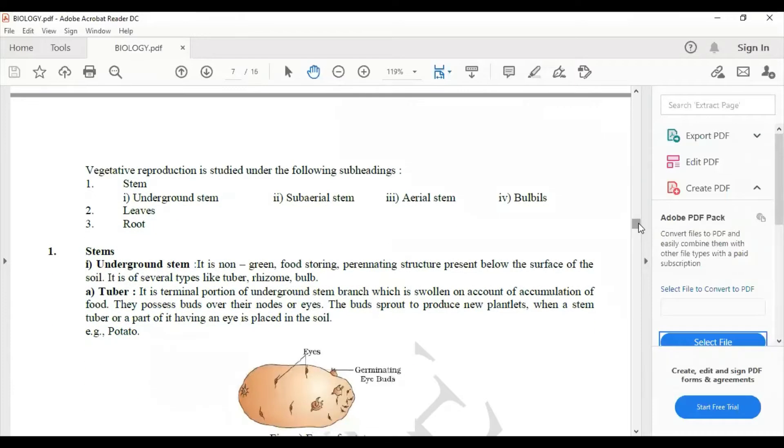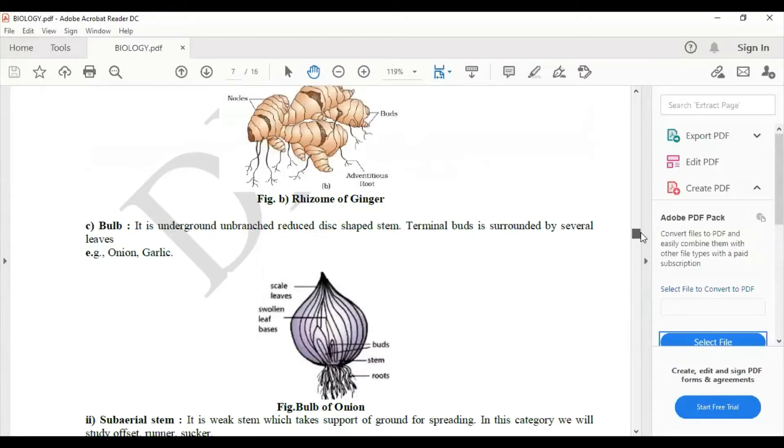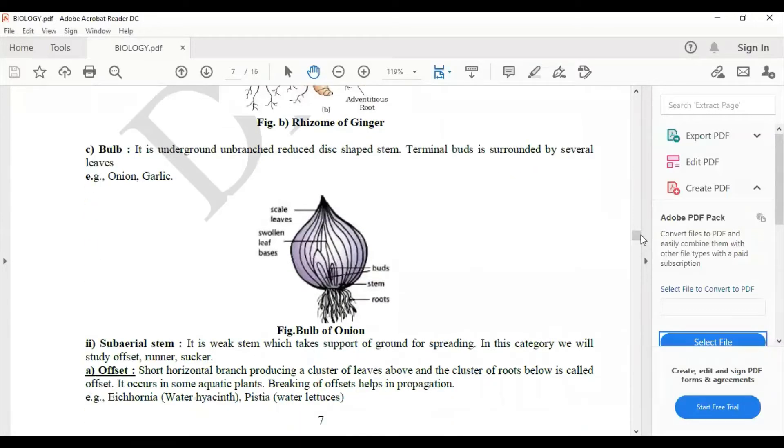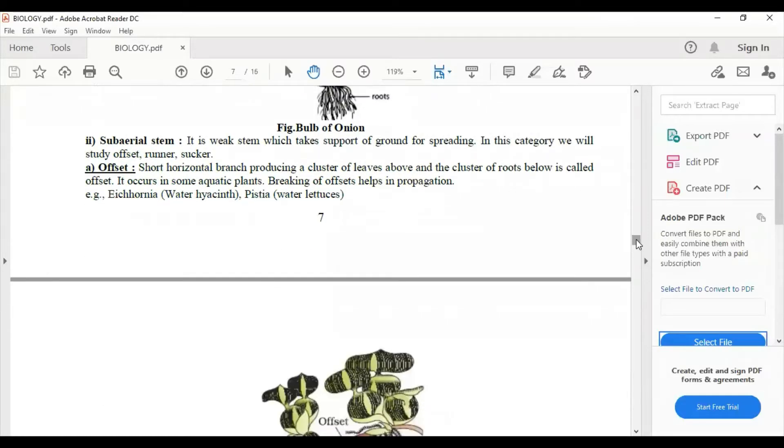Then these are the vegetative propagation which you'll be studying - it is underground stem, and then moving on to rhizome. You'll also study about bulb, you'll also study about sub aerial stem, that is offset.